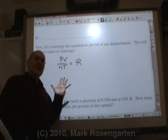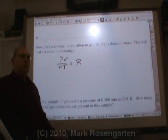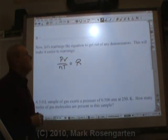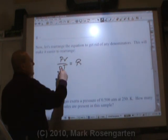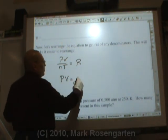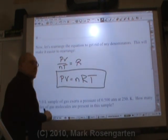This is called the ideal gas equation. But you know what? I'm going to rearrange this to get rid of any denominators because it's going to make it a lot easier to rearrange and do algebra with. So let's get rid of N and T. N and T are on the bottom here. Let's put them on the top of the other side. PV equals NRT. That is the ideal gas equation.